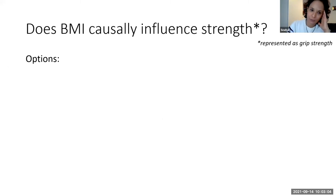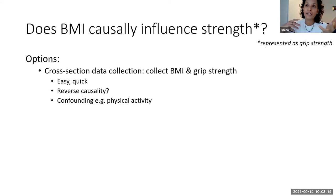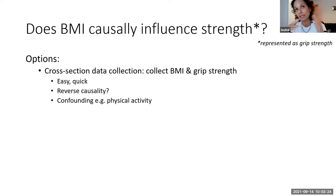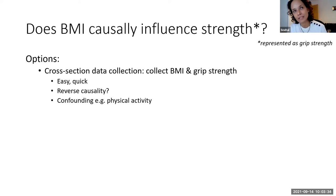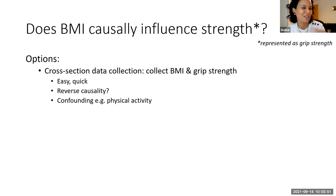Imagine I have a question: does BMI causally influence strength? I have several options in terms of study design. I can collect data cross-sectionally — for example, I can come to this group meeting, collect everyone's information on BMI and grip strength, and do a quick graph to see how they're related. Super quick, super easy. But maybe it's not the best study design, because there could be issues around reverse causality — BMI could influence strength, but strength may also influence BMI.